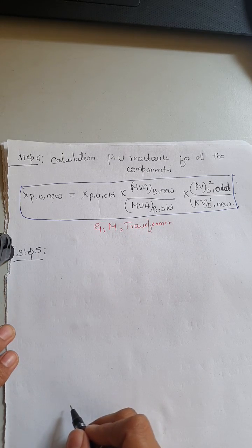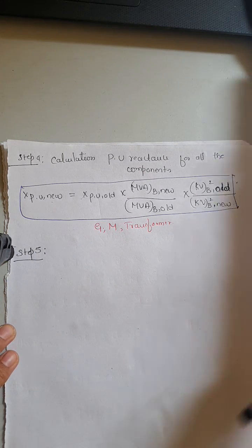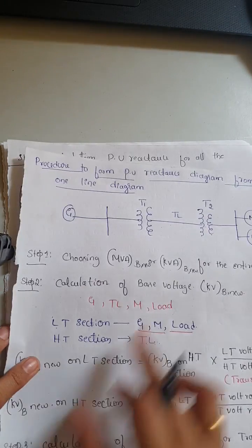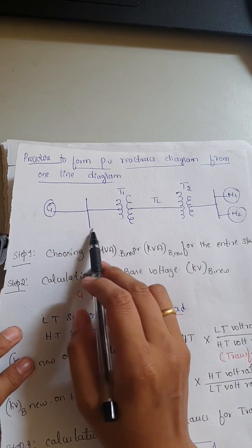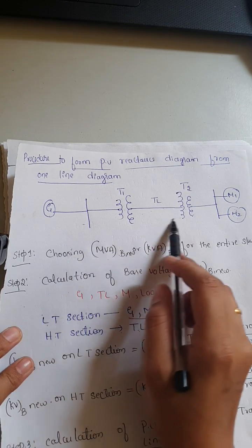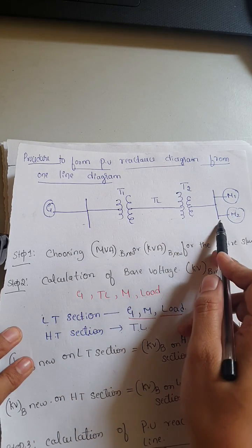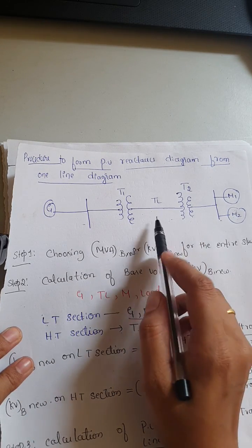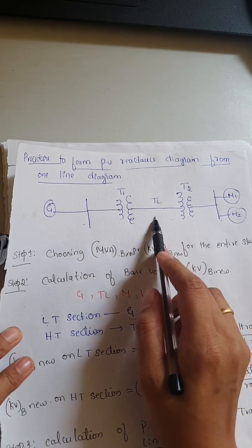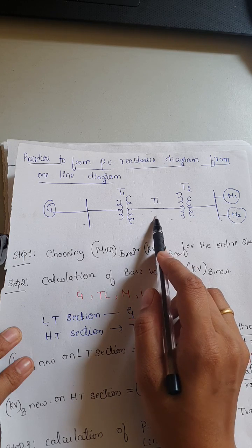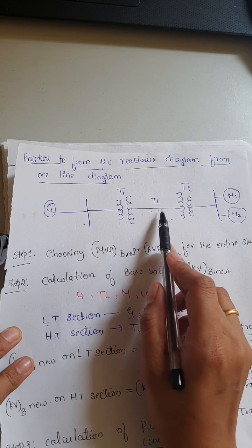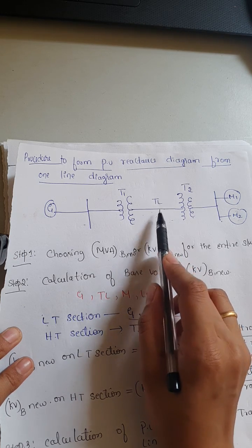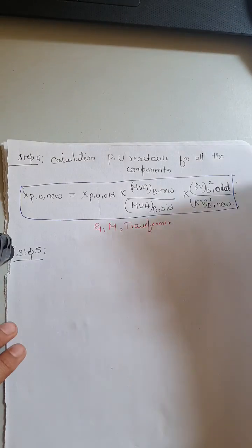Step five is drawing the per unit reactance diagram from the one-line diagram. In this step, all reactances in the single-line diagram have already been converted into per unit values, and you now represent the one-line diagram as a reactance diagram.